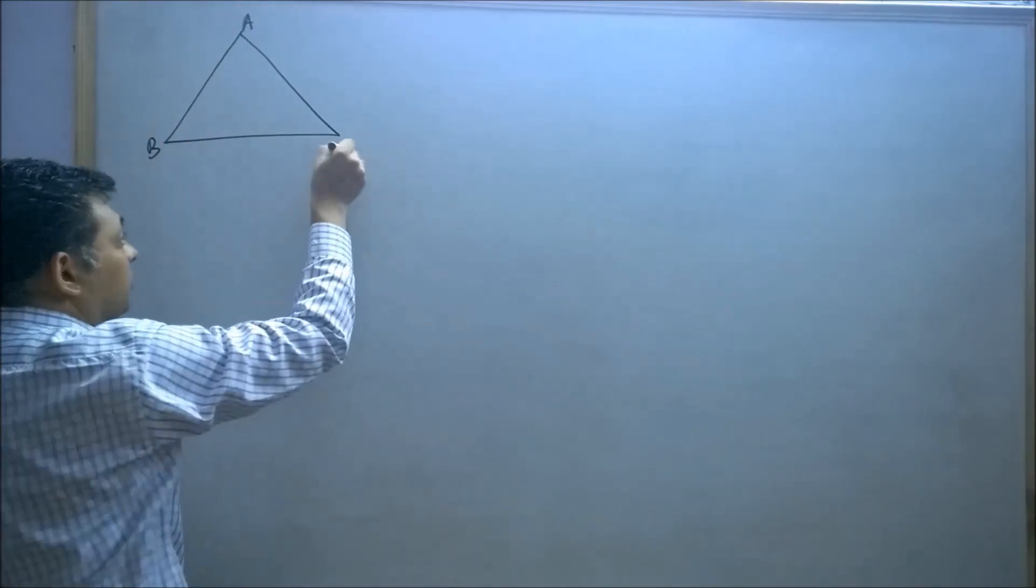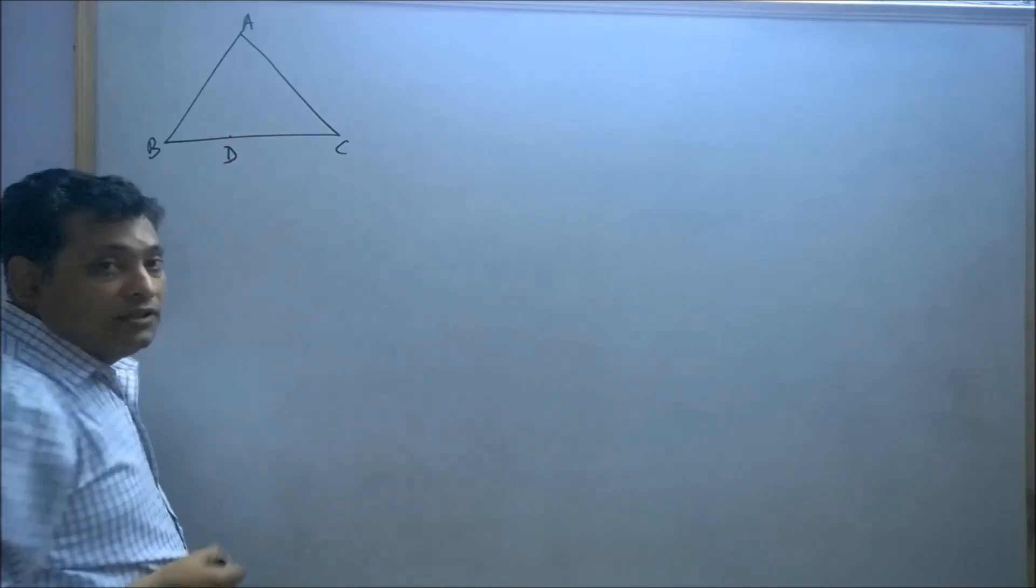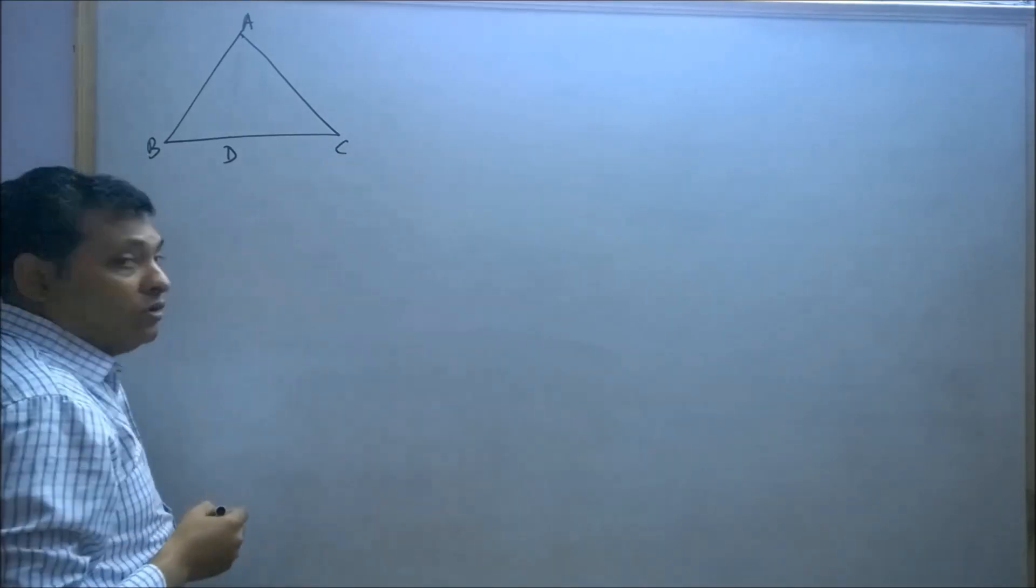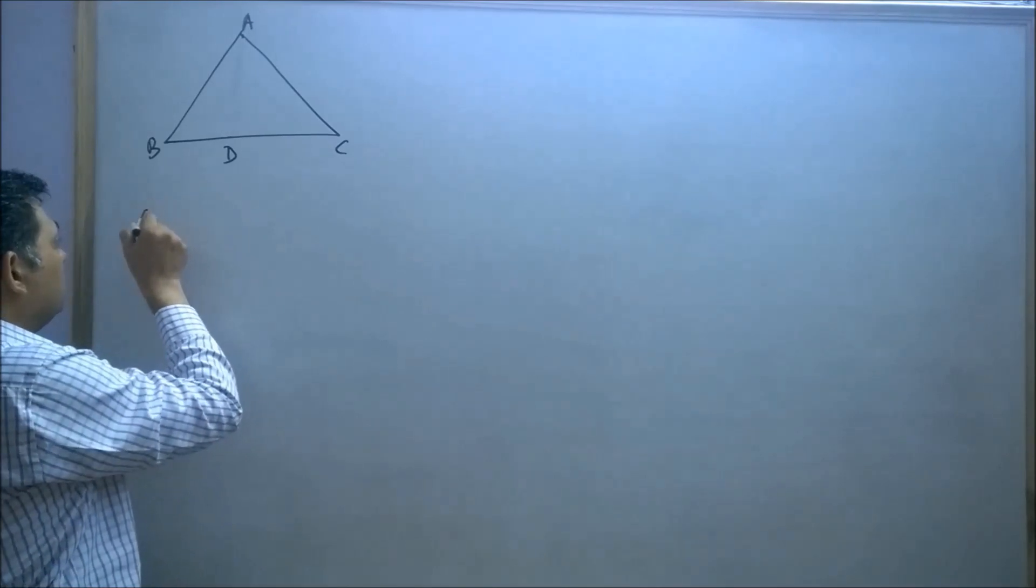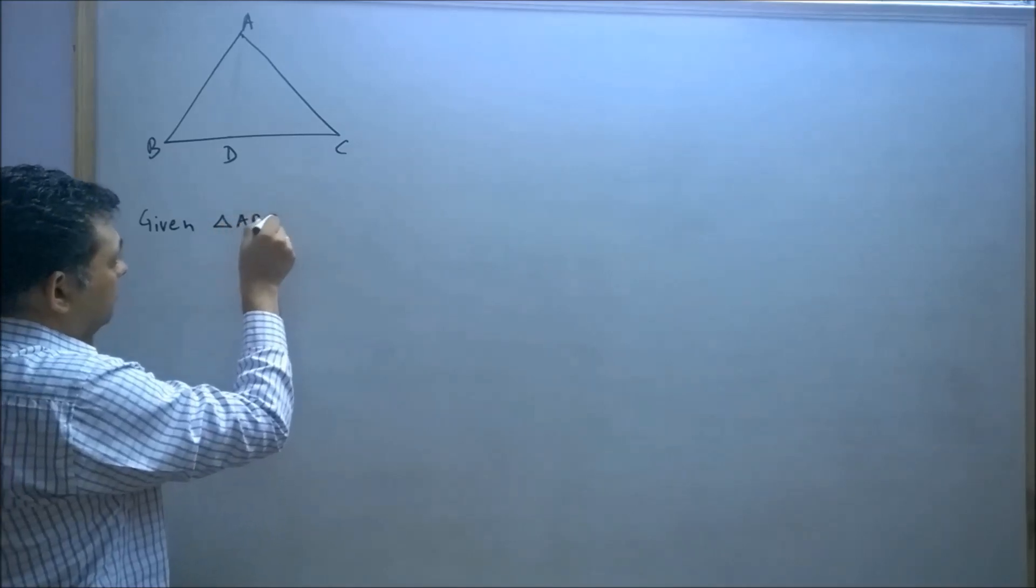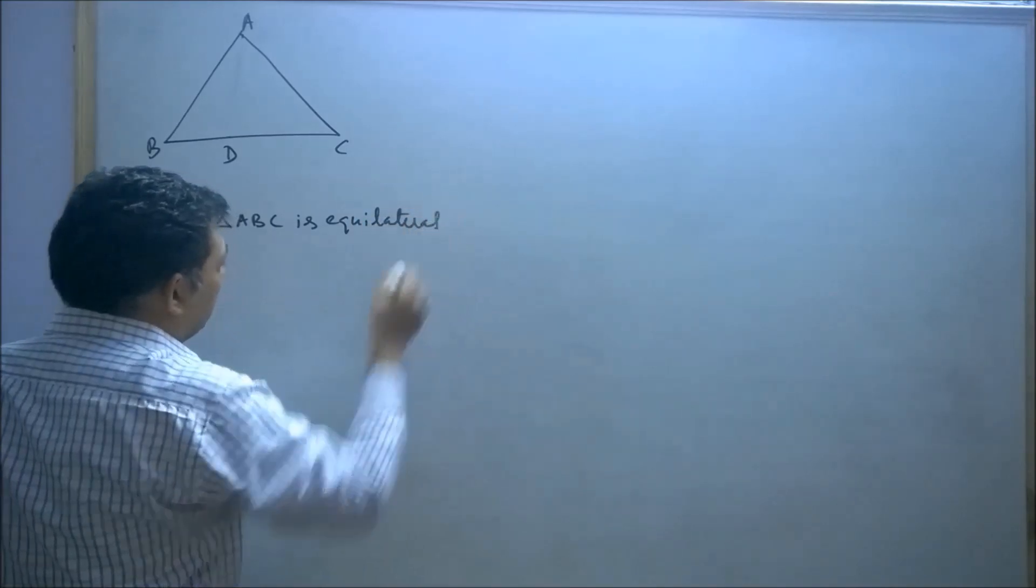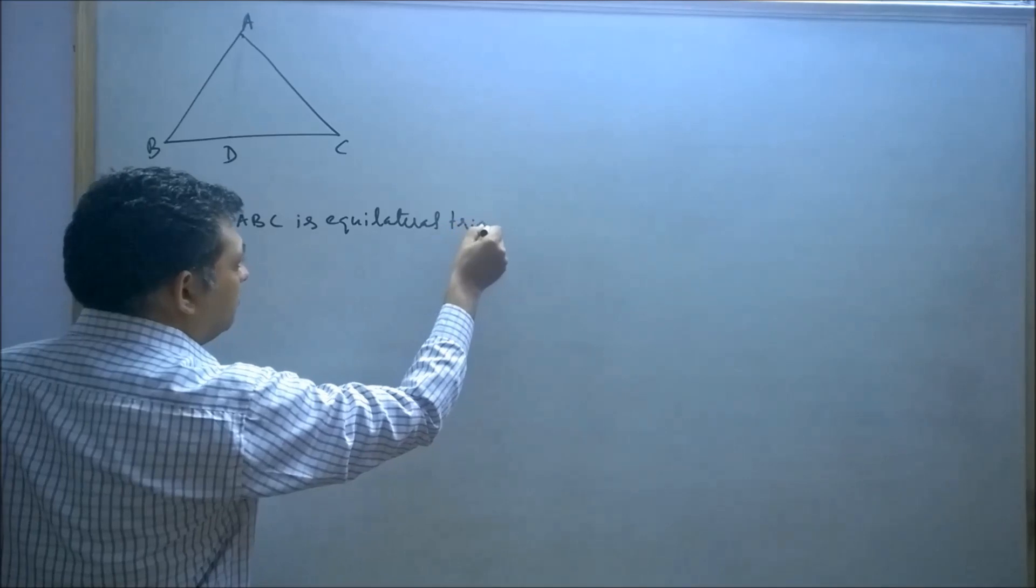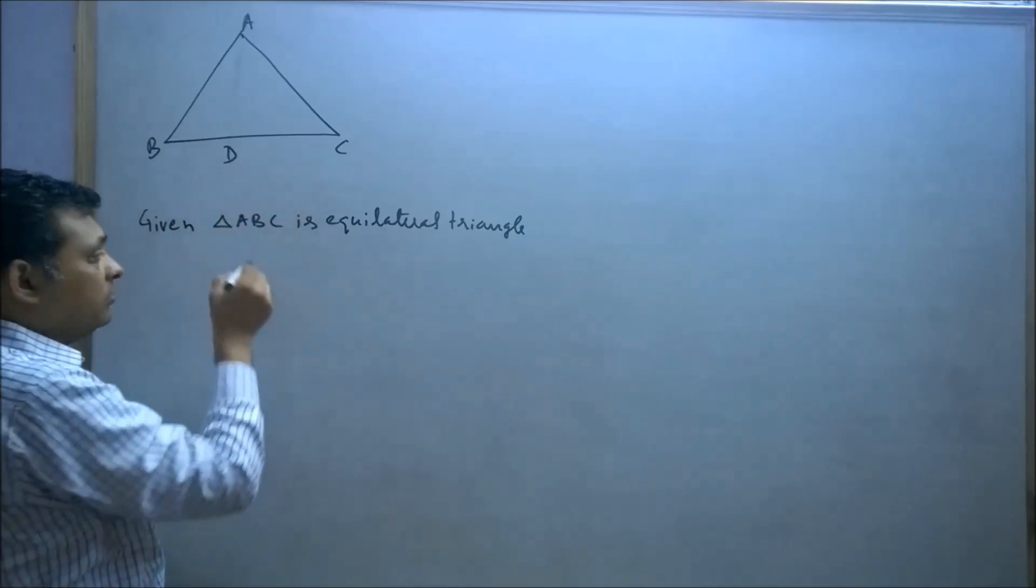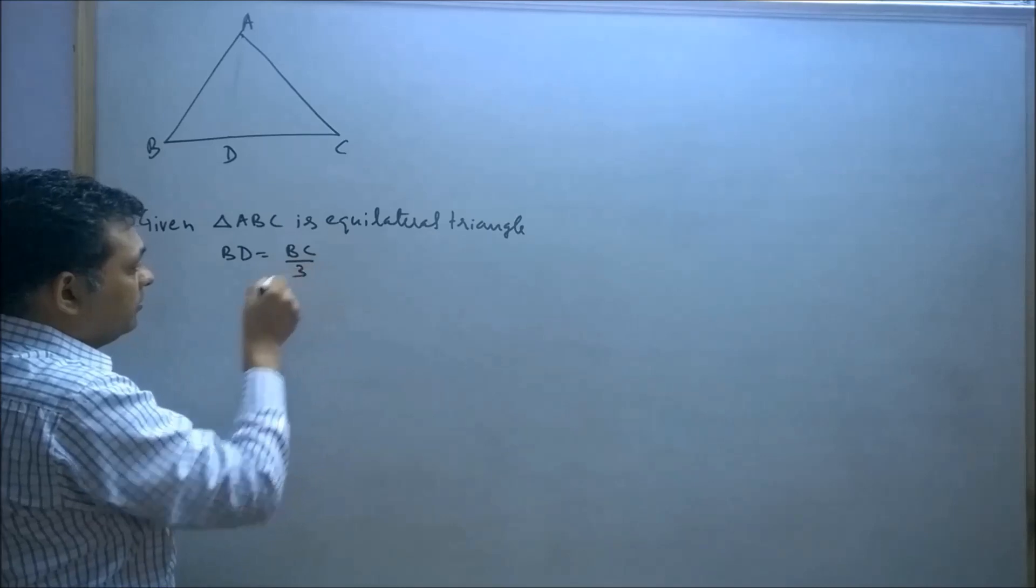It is given in the question: ABC is an equilateral triangle and D is a point on BC such that BD is equal to one-third of BC. So BD equals BC by 3.